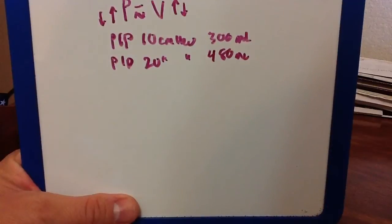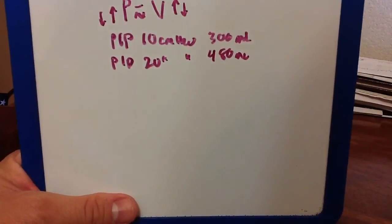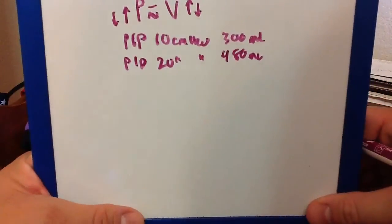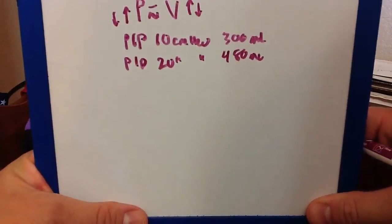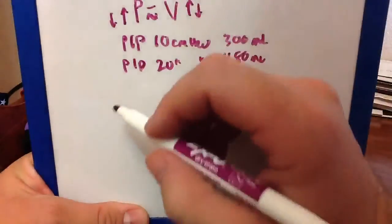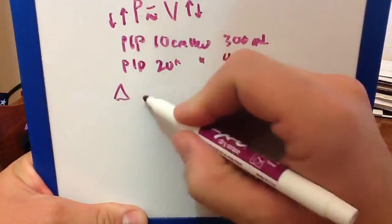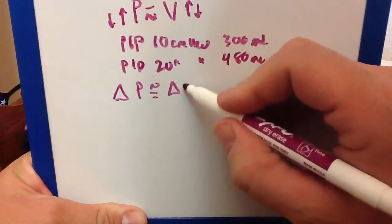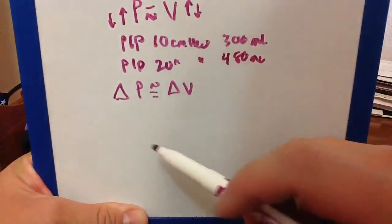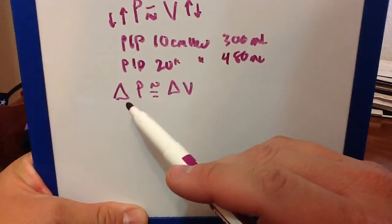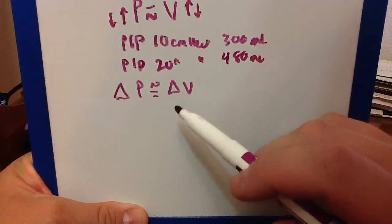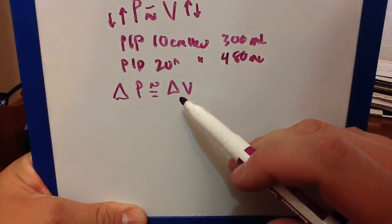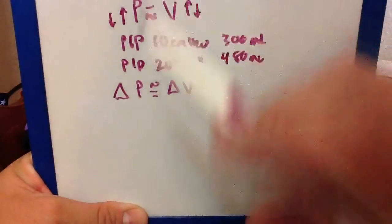The relationship, however, is not pressure per se. The relationship between pressure and volume in pressure control ventilation is not pressure, it is delta P. Delta P approximates delta V. That is to say a change in pressure is going to equate to a change in volume. This is very different than just pressure.